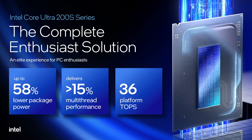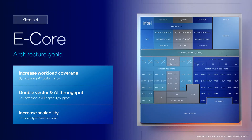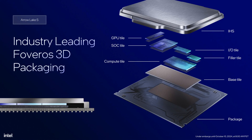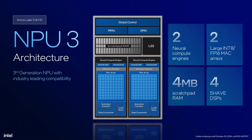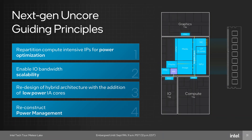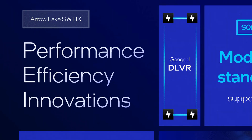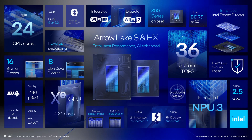Arrow Lake is Intel's revolutionary new processor for mainstream desktop, featuring new P-Cores and E-Cores, disaggregated tile-based 3D Foveros packaging, an integrated NPU for AI acceleration, a next-generation UnCore, DLVR Power Rails, and so much more. In this video series I have a closer look at the Arrow Lake performance tuning and overclocking opportunities.